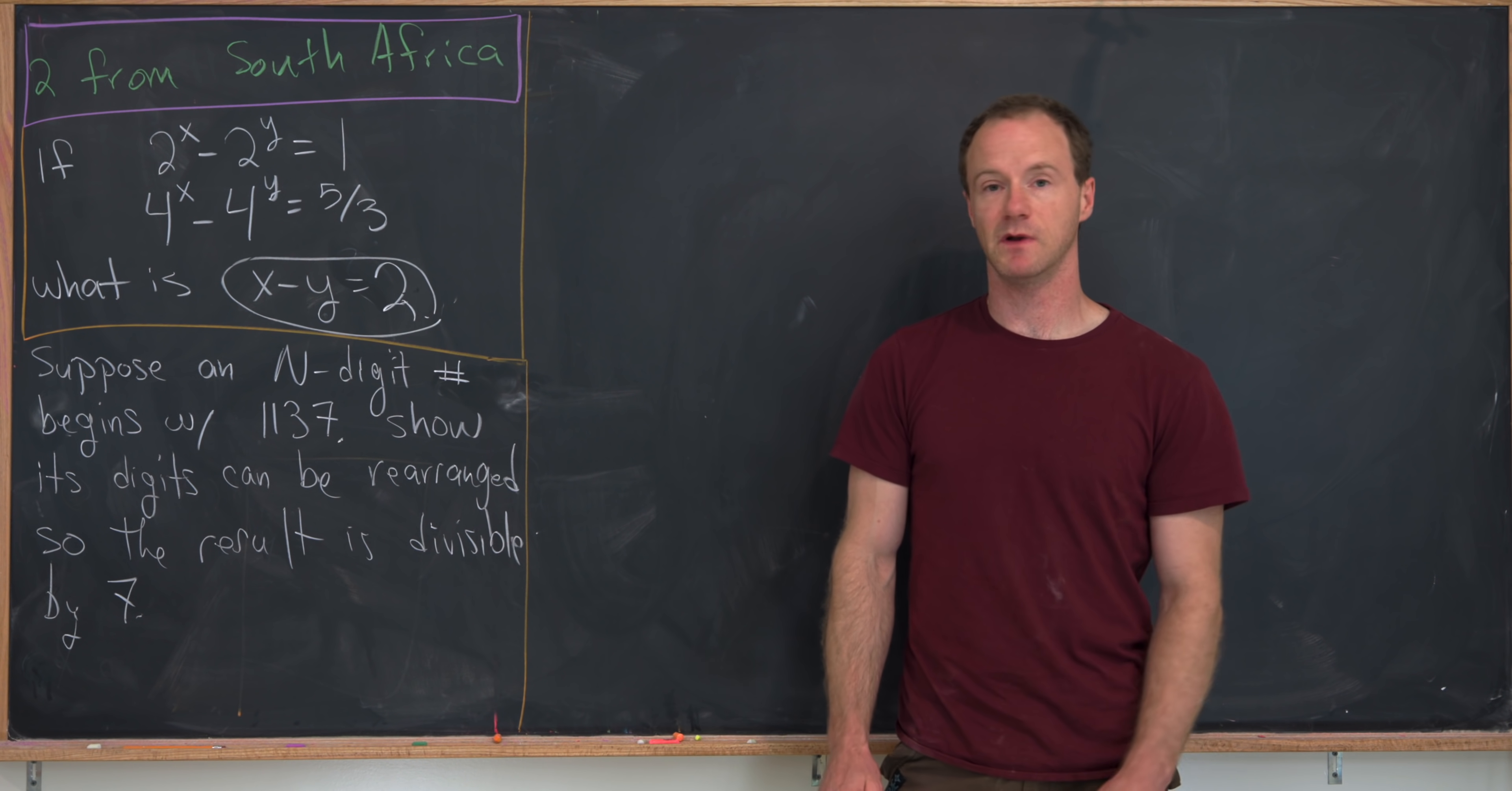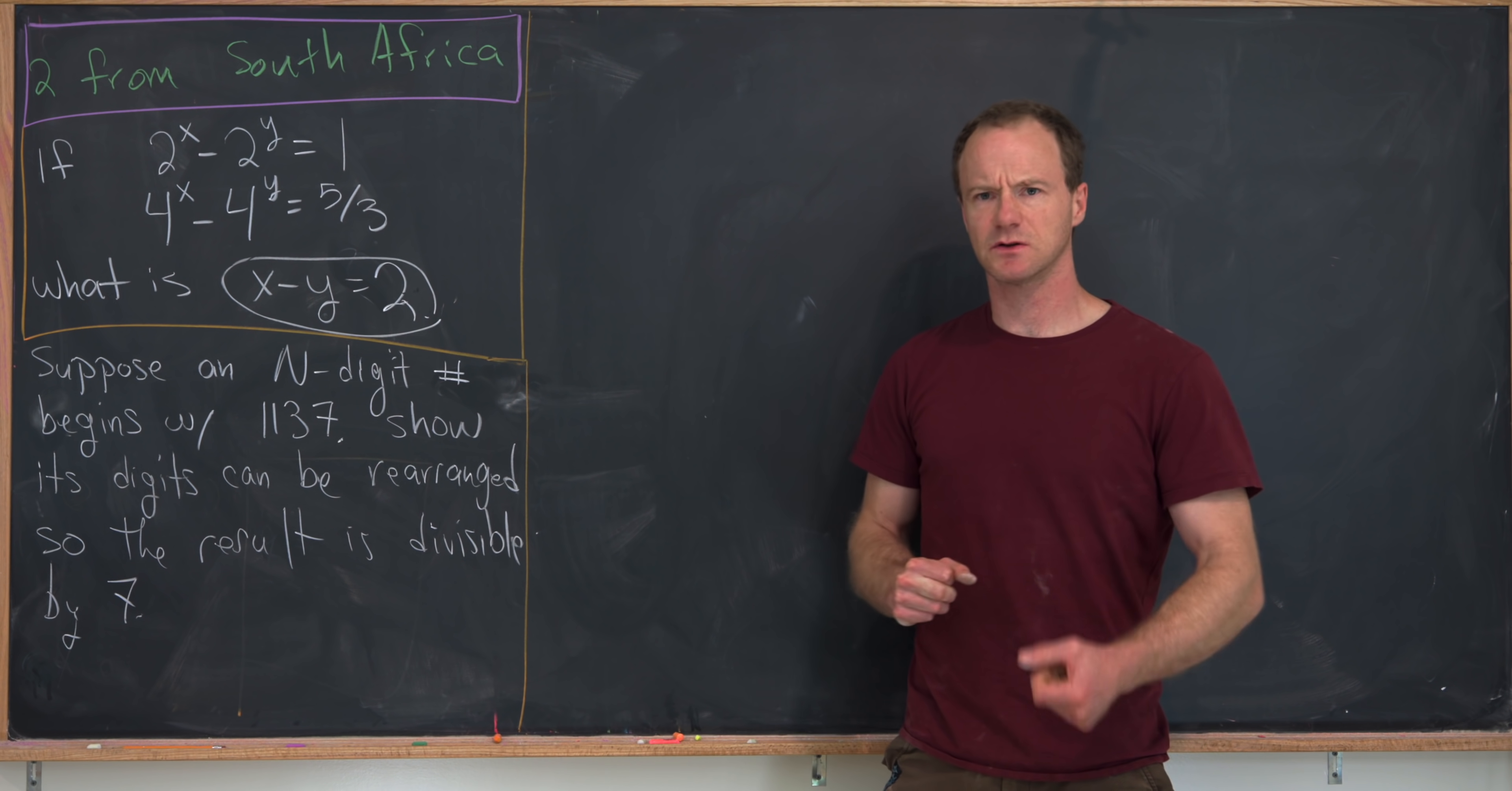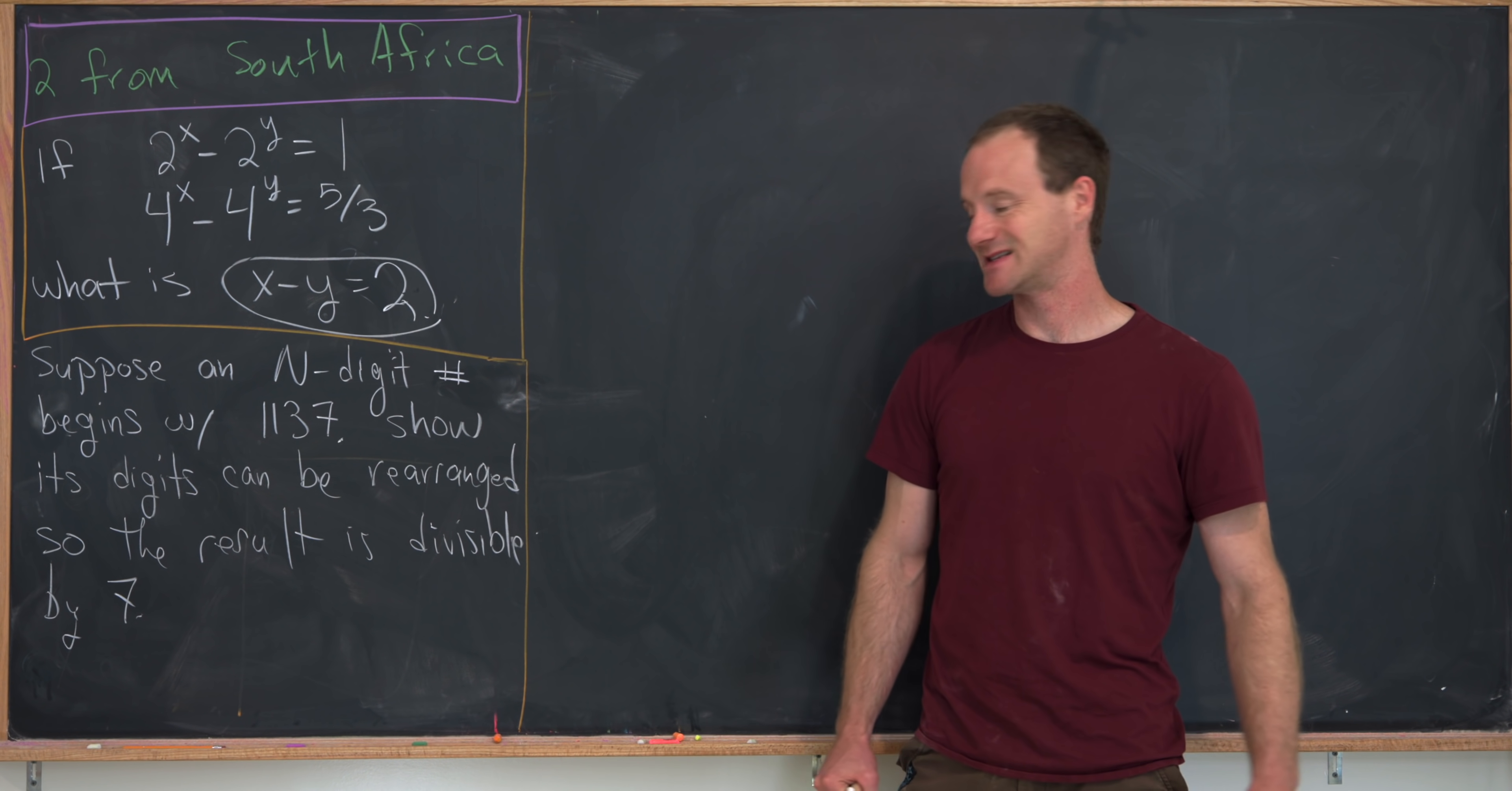We're going to use some number theory. So let's suppose that we have an n-digit number, and it begins with 1137. So that means it looks like 1137 and then maybe a bunch of other digits.